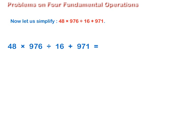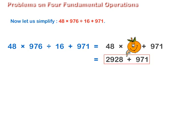Now let us simplify 48 multiplied by 976 divided by 16 plus 971. Step 1: Divide 976 by 16, we get 61. Step 2: Multiply 48 by 61, we get 2928. Step 3: Now add 2928 and 971, we get 3899.